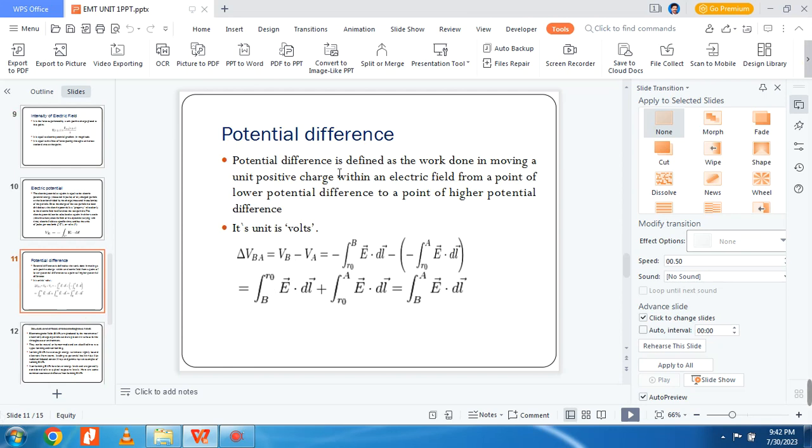Then, the potential difference. It is the work done in moving a unit positive charge within an electric field from a point of lower potential to the point of higher potential. This is the change of voltage between A and B. VB minus VA equals minus integral from A to B of E dot dL minus integral from A to B of E dot dL.